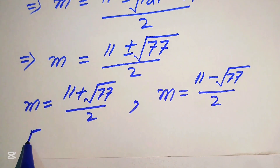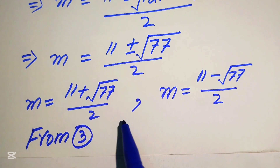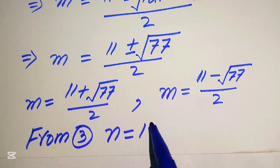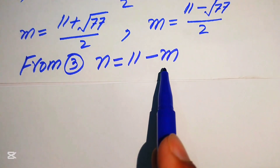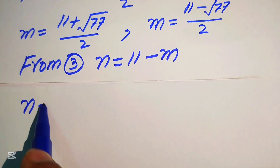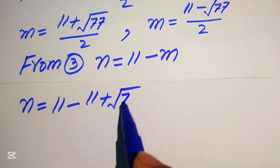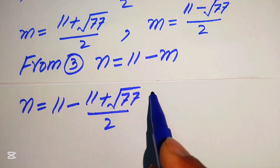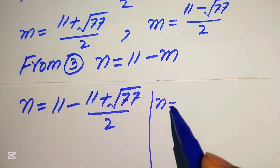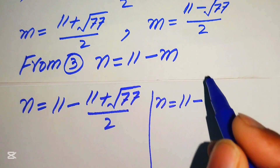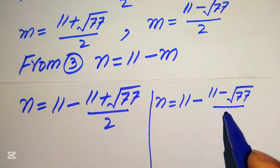To find the corresponding values of n, we use equation number 3: n equals 11 minus m. Putting the first value of m, we get n equals 11 minus (11 plus square root of 77) divided by 2. For the second value of m, n equals 11 minus (11 minus square root of 77) divided by 2.